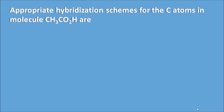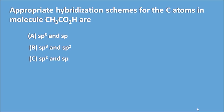Next question: what are the appropriate hybridization schemes for the C atoms in the molecule CH₃CO₂H? Options: A. Sp3 and Sp, B. Sp3 and Sp2, C. Sp2 and Sp, and D. Sp3 and Sp3. The right answer is Option B: Sp3 and Sp2.